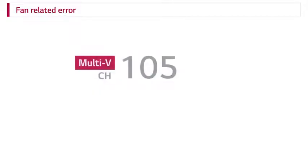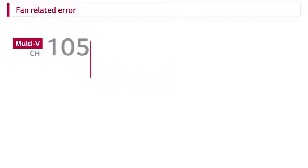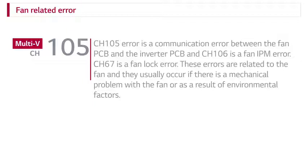Fan-related errors: CH-105 is a communication error between the fan PCB and inverter PCB, CH-106 is a fan IPM error, and CH-67 is a fan lock error. These errors are related to the fan, and they usually occur if there is a mechanical problem with the fan or as a result of environmental factors.